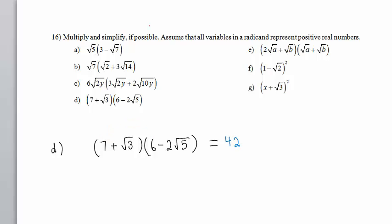The O, or outside of FOIL, is 7 times negative 2 square root of 5. Notice how I capture the negative sign, the minus sign. Positive times negative is negative. 7 times 2 is 14 times square root of 5.